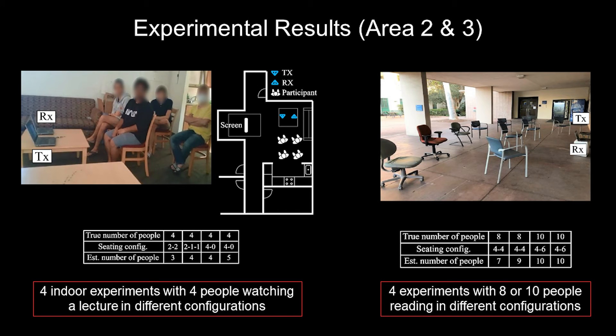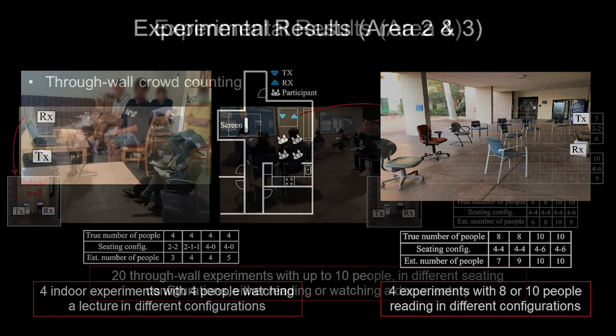In this covered area on the right, we ran 4 experiments where 8 or 10 people sat in different seating configurations while engaged in a reading activity. We can see that the counting error is zero or only one person in all experiments in this area as well.